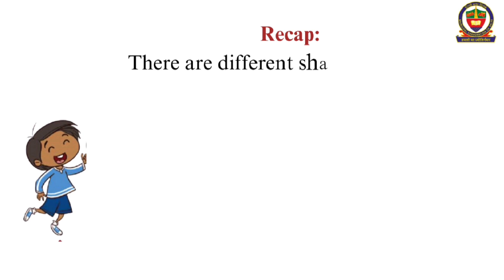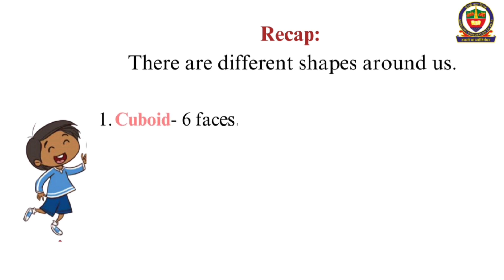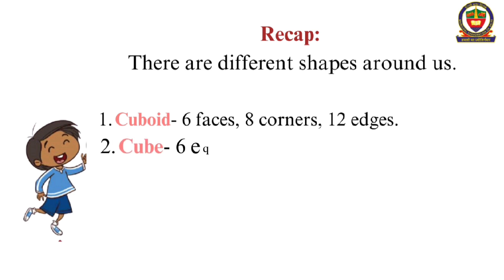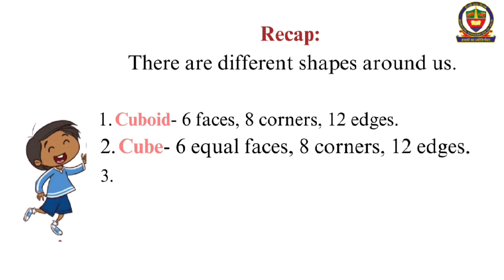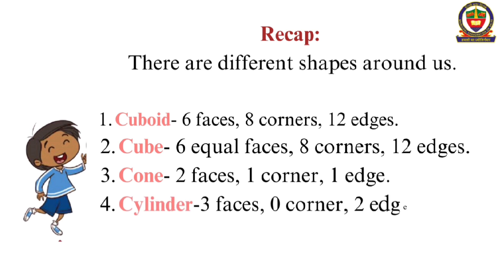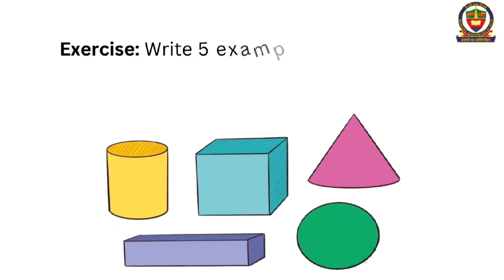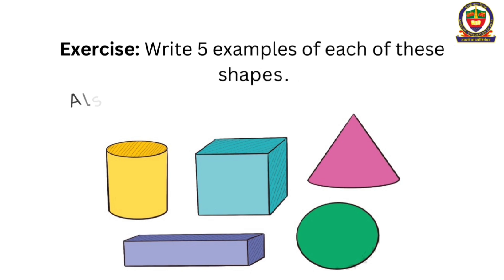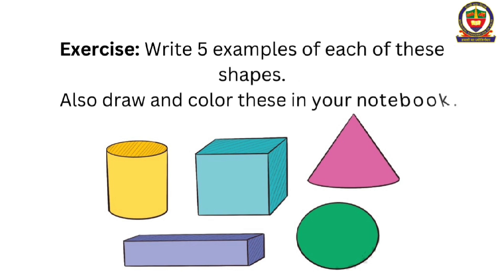There are different shapes around us. Cuboid: six faces, eight corners, twelve edges. Cube: six equal faces, eight corners, twelve edges. Cone: two faces, one corner, one edge. Cylinder: three faces, zero corners, two edges. Sphere: one face, zero corners, zero edges. Write five examples of each of these shapes, and draw and colour them in your notebook.